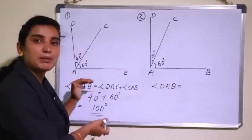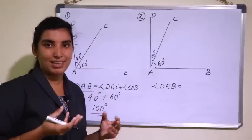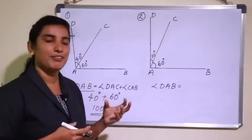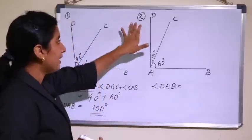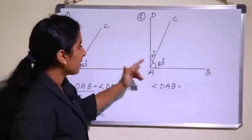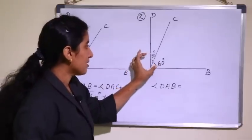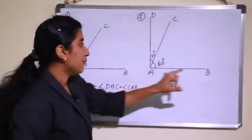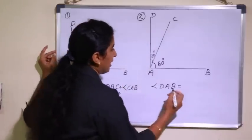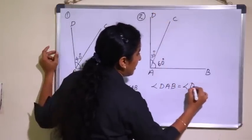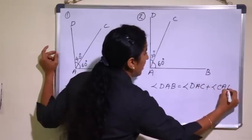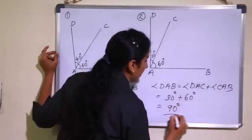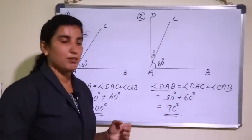We can do this step by step. Let's go to the second question. The two angles are 30 degrees and 60 degrees. The angle DAB is equal to angle DAC plus angle CAB. The angle CAB is equal to 30 degrees plus 60 degrees, which is equal to 90 degrees. So the angle DAB is equal to 90 degrees.